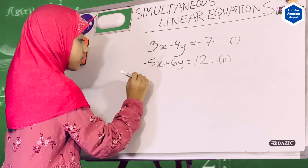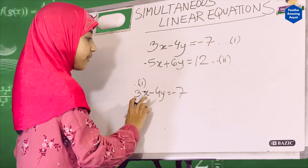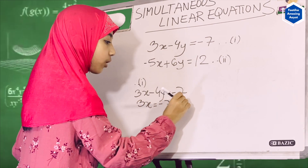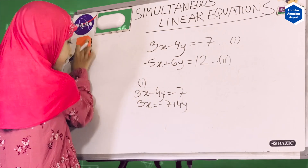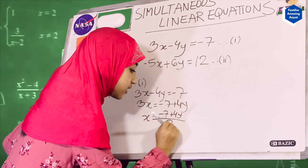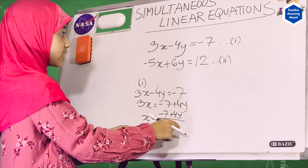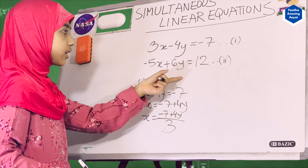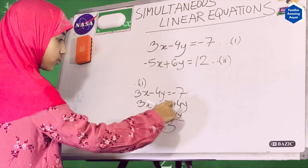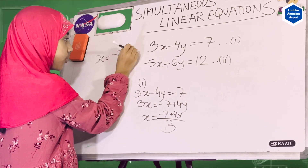What we'll do is work with equation number 1 first: 3x minus 4y equals minus 7. We can figure out x from here. So then 3x equals minus 7 plus 4y, and dividing both sides by 3, x equals minus 7 plus 4y, divided by 3. This is just our x equation — we have to put this inside our second equation to figure out y. So write to the side that x equals (minus 7 plus 4y) divided by 3.